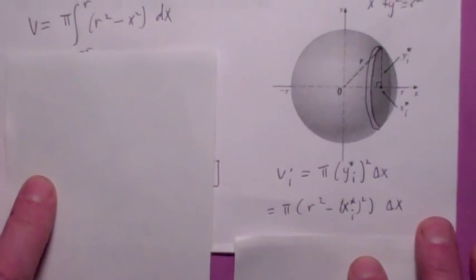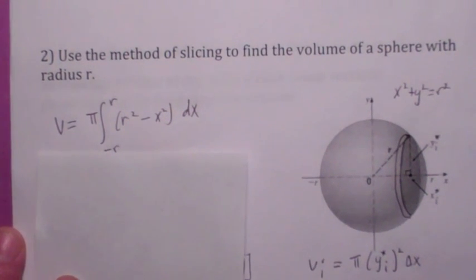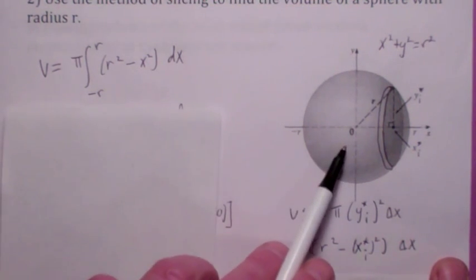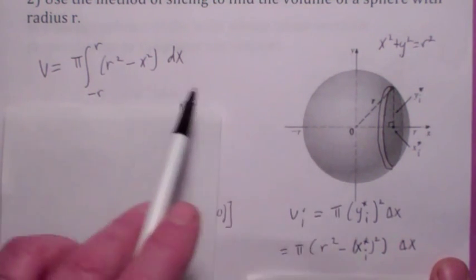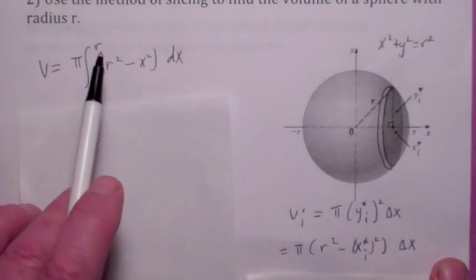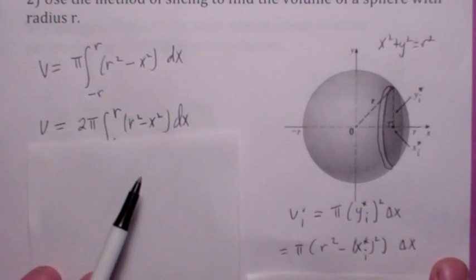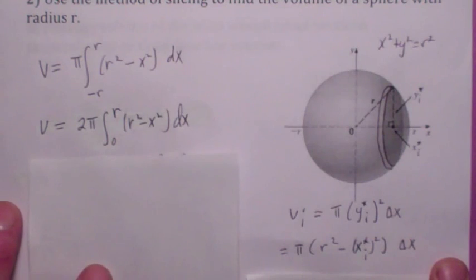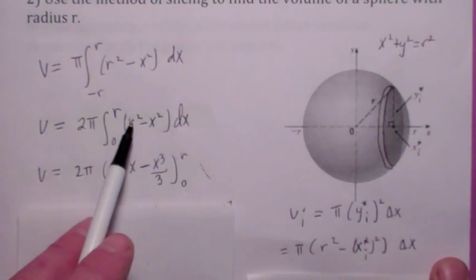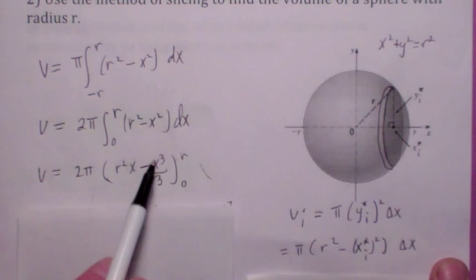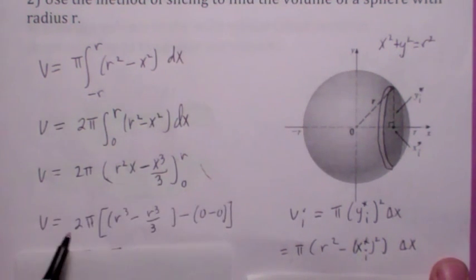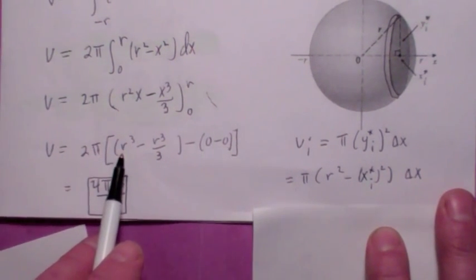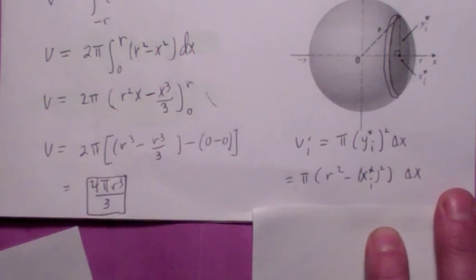Add those up and take the limit, and you end up with the volume as the definite integral from −r to r of π(r² − x²) dx. This turns out to be an even function — remember that property from section 5.5 — so you can say it's 2π times the integral from 0 to r of (r² − x²) dx. When you integrate that, r² becomes r²x and x² becomes x³/3. Evaluating from 0 to r gives 2π(r³ − r³/3), which comes out to be 4/3 πr³.